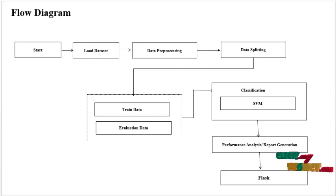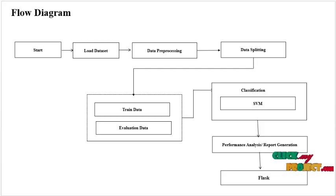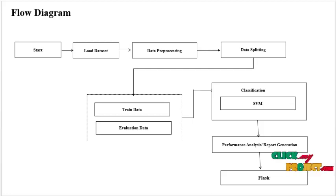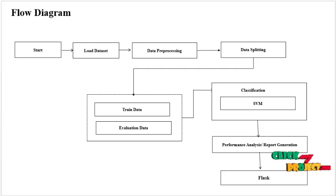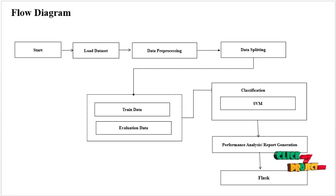First, start our program, then select and load the network intrusion detection dataset. Next, data pre-processing — this involves data cleaning, checking our dataset for any null values and replacing them with zero values, and label encoding. Label encoding means changing categorical values to numerical values. Next, data splitting: our data is split into training and evaluation data, where evaluation data is the testing data.